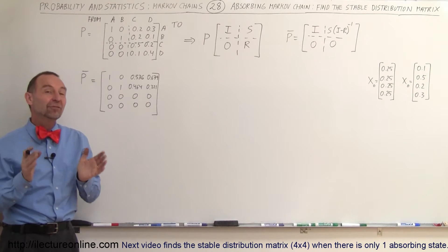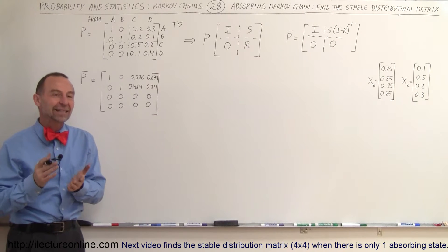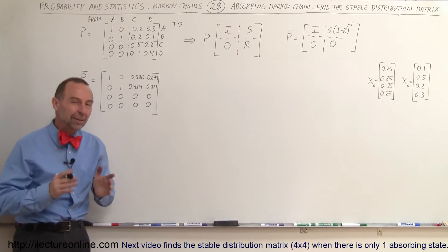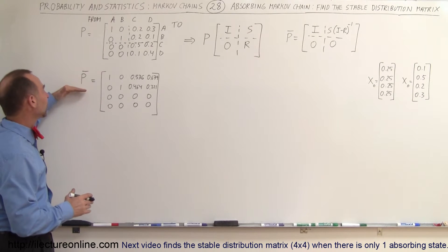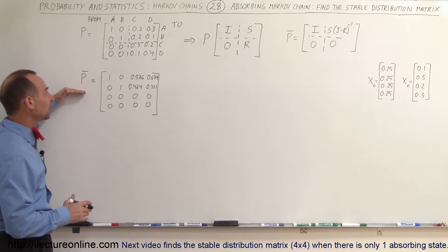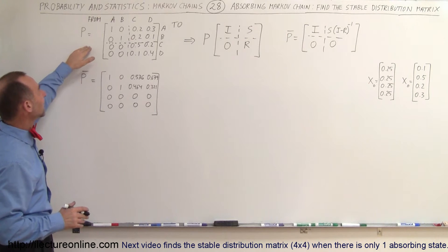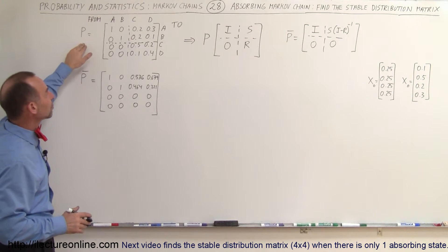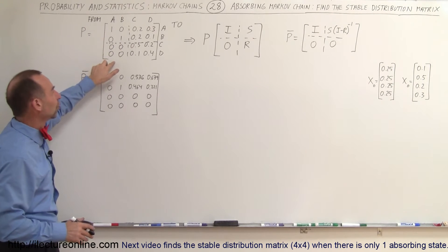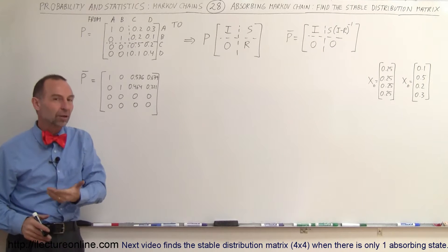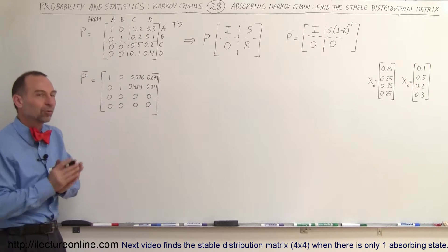Welcome to ElectronLine. In this video we're going to show you how to find the stable distribution matrix when we have found the stable transition matrix. In this particular case we had a transition matrix that has two states that are absorbing, so this is obviously an absorbing Markov chain.